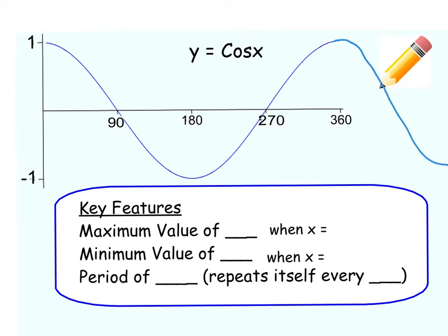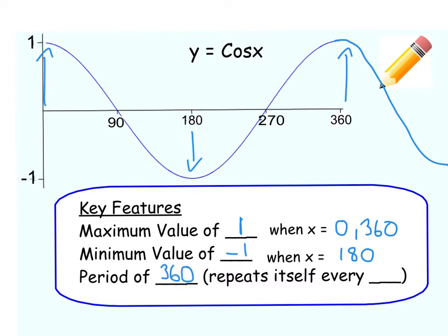That wave would keep going and finish its shape again at 720. The maximum value of the cosine graph is also 1, and this happens in two places — when x equals 0 and 360. It's got a minimum value of negative 1, which happens when x equals 180. The period is 360, which is where the shape starts to repeat. That's your cosine graph.